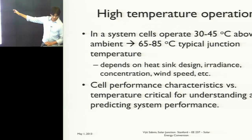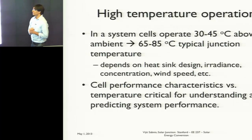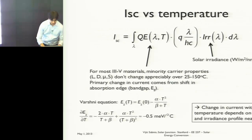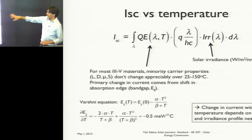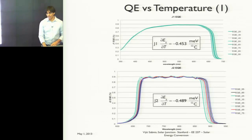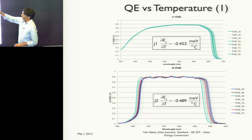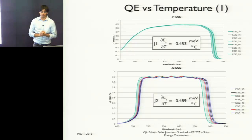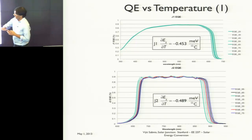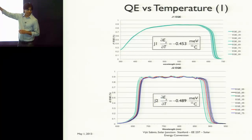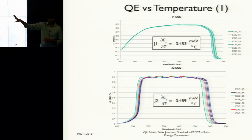Let's talk a little bit about temperature. Typically these cells will operate at about 65 to 85 degrees C. As you know, band gaps move, and as band gaps move, your quantum efficiency curves shift with temperature — at about half a millielectron volt per degree C. As these band gaps move, the amount of current collection that happens in each junction is going to shift.